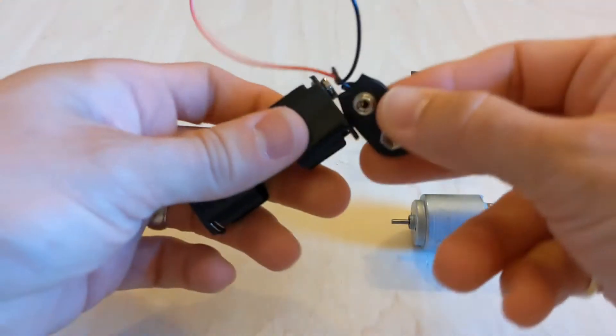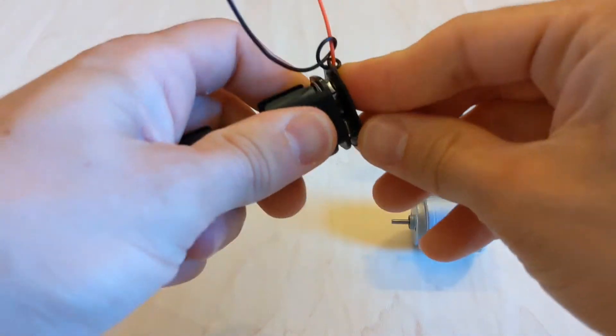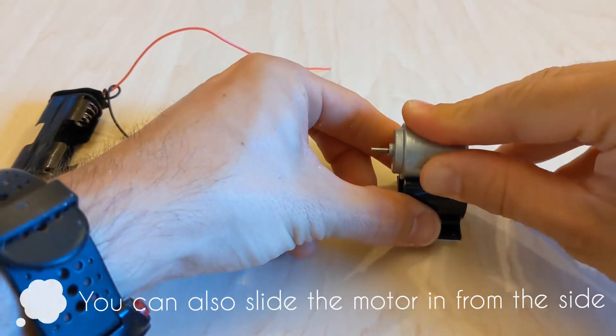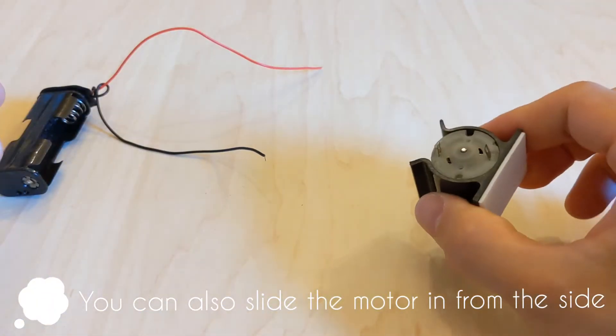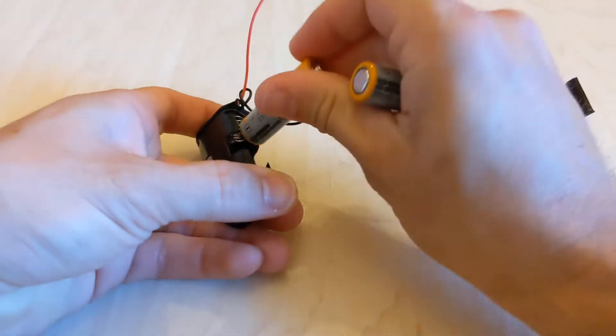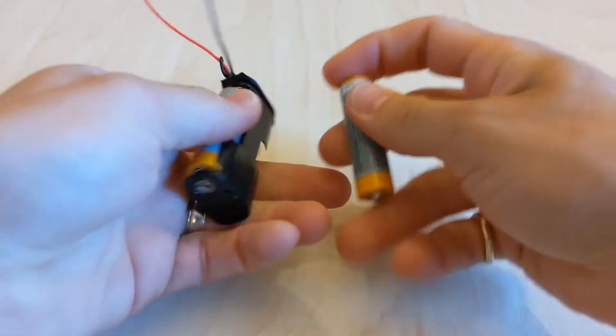Next connect your battery snaps to the battery pack and slide your motor into the motor mount, making sure the terminals are to the sides. Once you've done that, put two batteries into your battery pack.